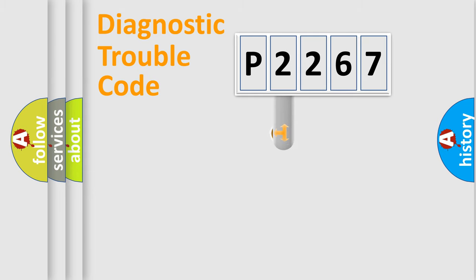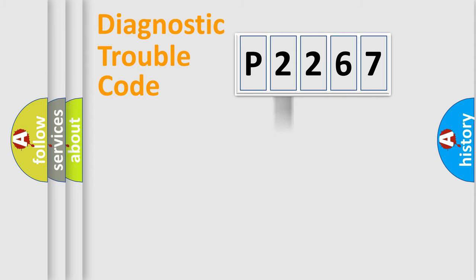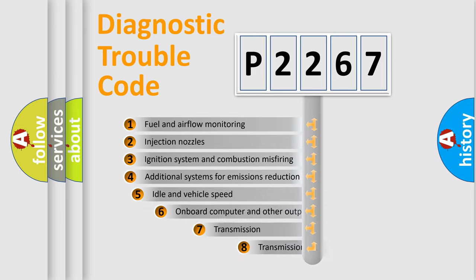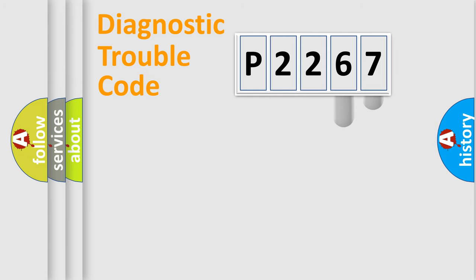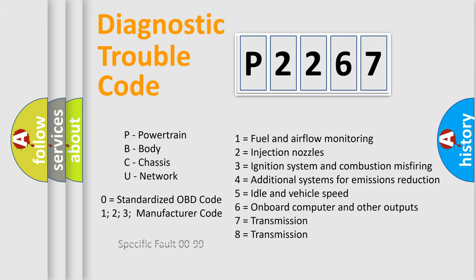This distribution is defined in the first character of the code. If the second character is expressed as zero, it is a standardized error. In the case of numbers 1, 2, or 3, it is a more manufacturer-specific expression of a car-specific error. The third character specifies a subset of errors, and this distribution is valid only for the standardized DTC code. Only the last two characters define the specific fault of the group, and such a division is valid only if the second character is expressed by the number zero.